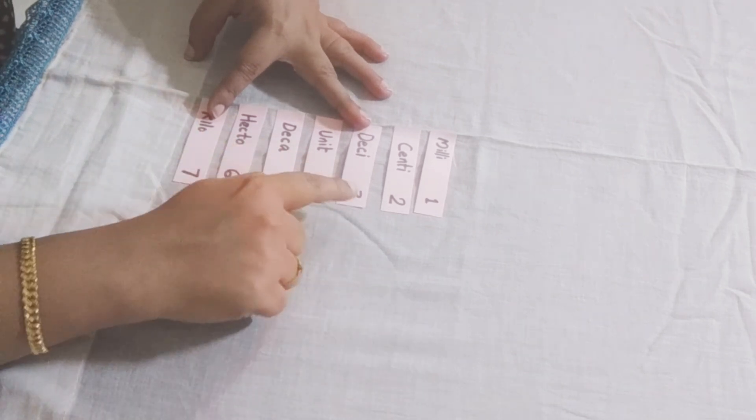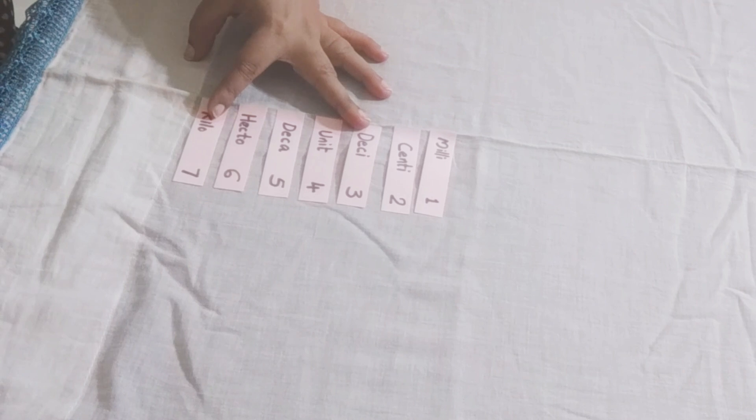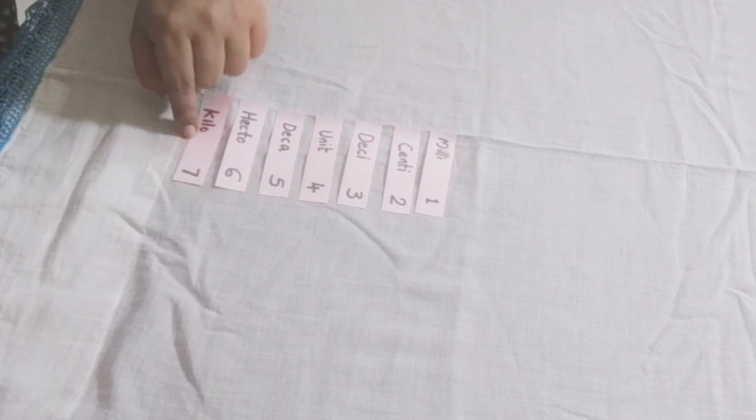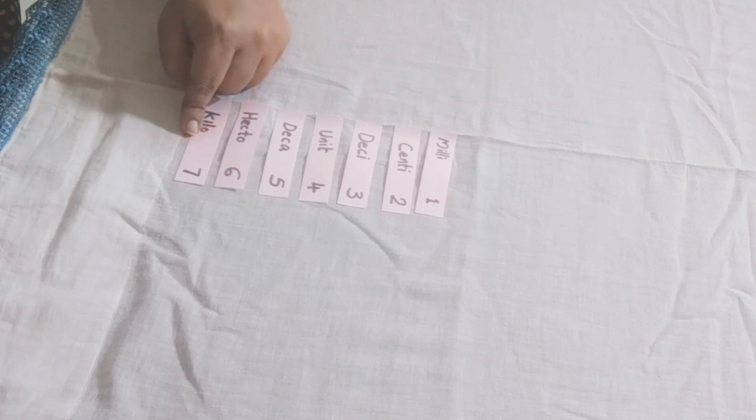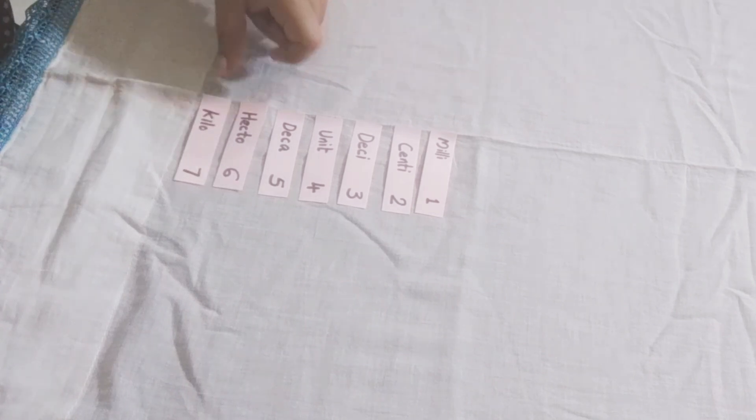If you want to convert kilo to deci, how many zeros do you need to add or what number should you multiply that with? Seven minus three is four. So you will have to multiply this number by a number which has four zeros, or you need to add four zeros to the right of that number. So isn't it easy to convert a higher unit to a lower unit?